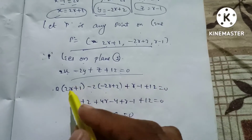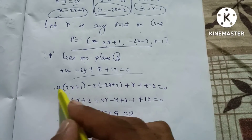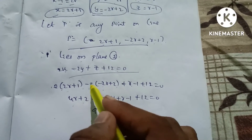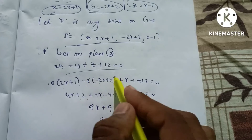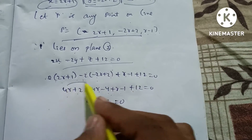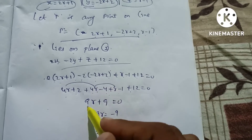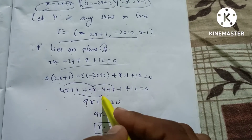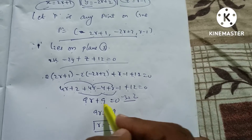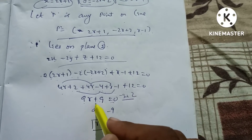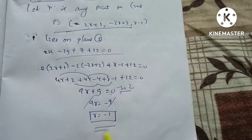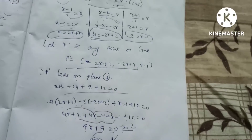Substituting point P into the plane equation: 2(2r plus 1) minus 2(minus 2r plus 2) plus (r minus 1) plus 12 equal to 0. Expanding: 4r plus 2 plus 4r minus 4 plus r minus 1 plus 12 equal to 0. So 9r plus 9 equal to 0, giving r equal to minus 1.